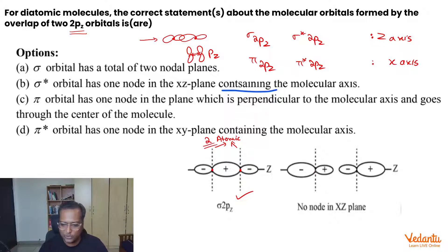Sigma star, as you can see, will have 3 nodal planes. But the question says it has 1 node in the x-z plane. This was the z-axis, and this is your y-axis. Where will be the x-axis? The x-axis will be in this direction. So if we talk about the x-z plane, these orbitals are actually present in the x-z plane. Do we get any nodal plane in the x-z plane? No.